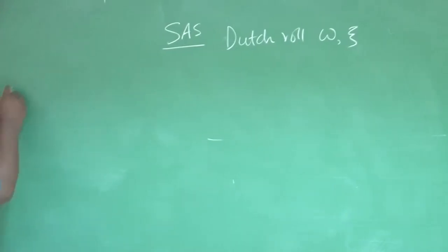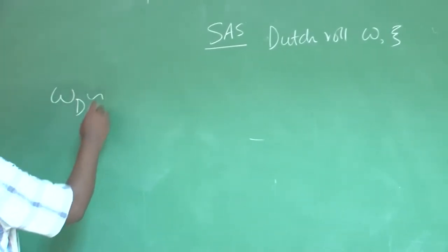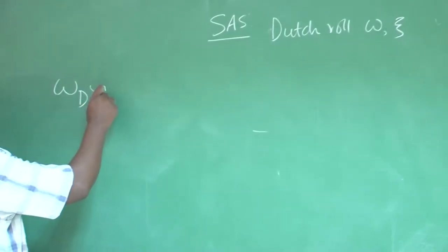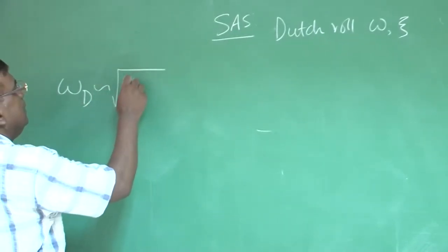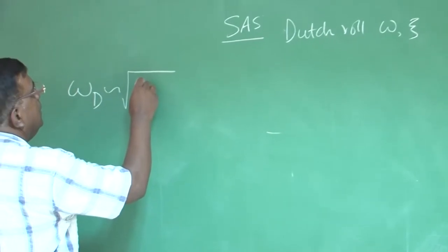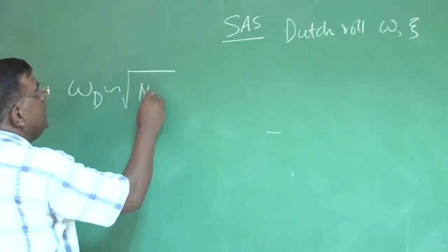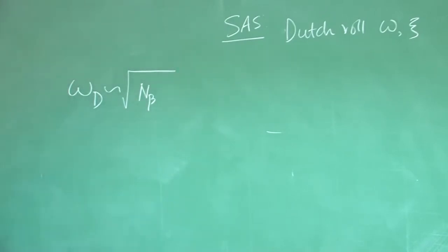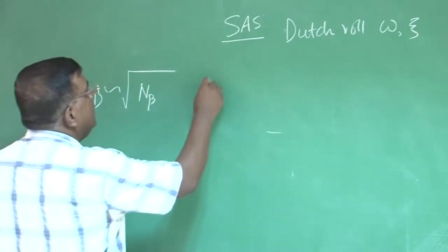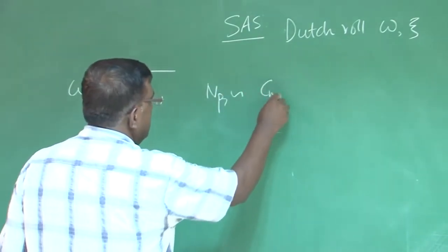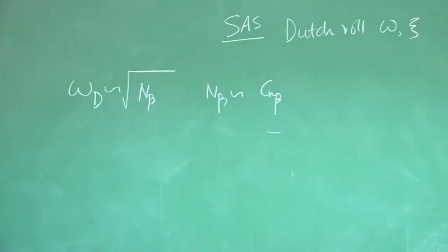We have seen that omega d from 1D analysis, it is directly proportional to n beta. And n beta has c n beta into this, because n beta is half rho v square s b c n beta by i zz.